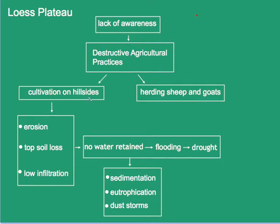The main reason for the degradation of the Loess Plateau was the lack of awareness, which brought with it destructive agricultural practices — the cultivation on the hillsides and the herding of sheep and goats. When crops failed, there was even more herding of sheep and goats. All of this led to rapid erosion, topsoil loss, and with the loss of vegetation, low infiltration. No water was retained in the soil, leading to rapid runoff and to flooding. With no infiltration and rapid runoff, there was eventually drought.